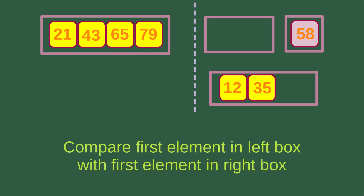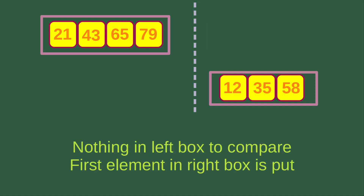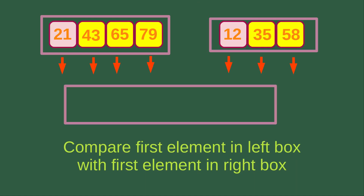Now we compare the left box, which has nothing inside, with the right box, which has 58. So we simply put 58 into the merging box. Now we have three elements sorted. Then, after we have got the two merged boxes, we need to merge the elements in these two boxes into a larger merging box.